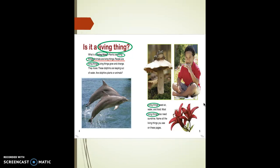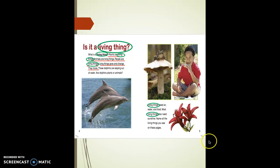Good readers find key details about the main topic. What did I learn about living things? My first detail: plants are living things, animals are living things, and people are living things. The next detail: living things grow and change, and they move. And finally, another key detail: living things need air, water, and food, and most living things also need sunshine.